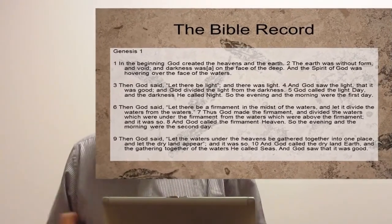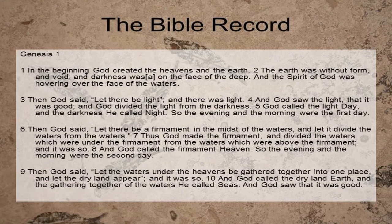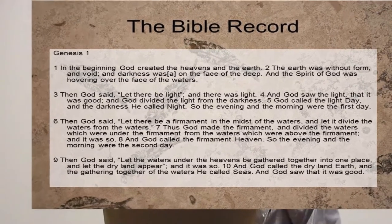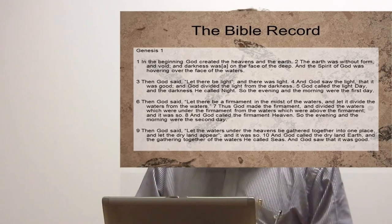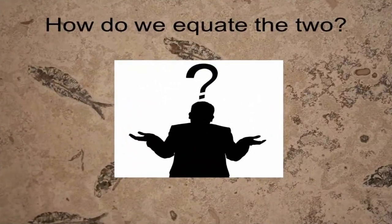And then, of course, here we have the Bible record, which we all know: in the beginning God created the heavens and the earth. The earth was without form and void. God said, let there be a firmament in the midst of the waters, and let it divide the waters from the waters. The evening and morning were the second day. We know it goes through the days of creation. And if we combine that with the genealogies, we can say there were six days of creation, and those were 6,000 years ago. So how do we correlate six million layers of light and dark sediment in the Green River area with the Bible record that says there were six days about 6,000 years ago? How do we equate the two?